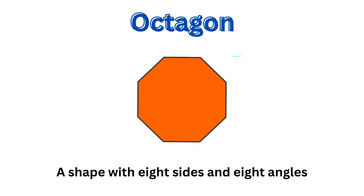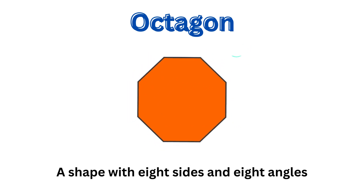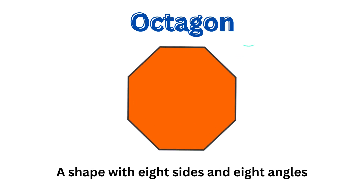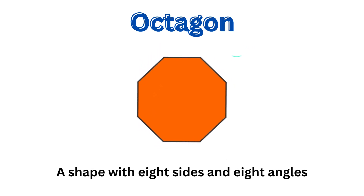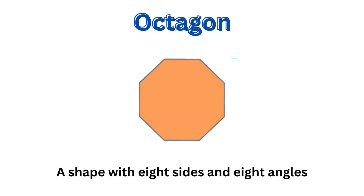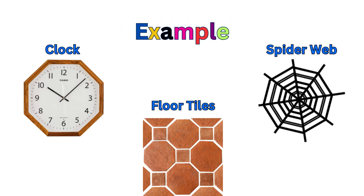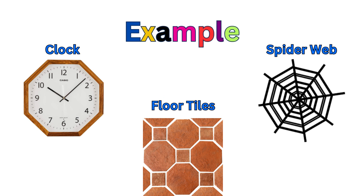This shape is an octagon — a shape with 8 sides and 8 angles. The examples are a clock, float ties, and a spider web.